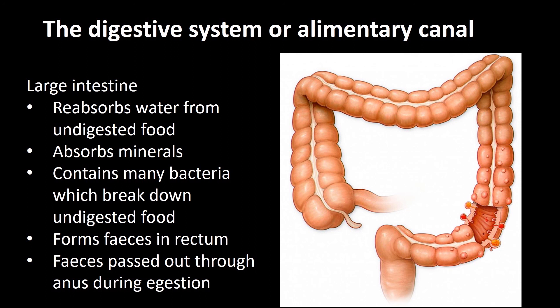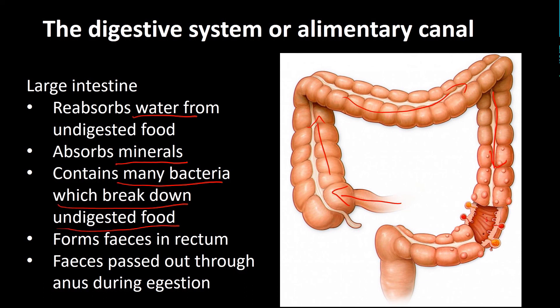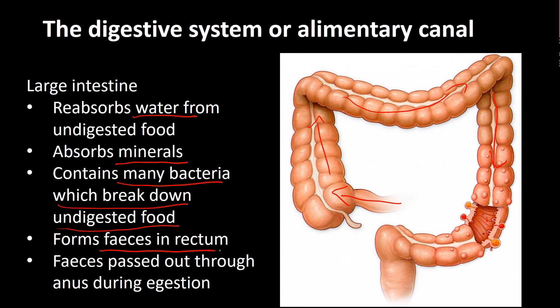The last part is the large intestine. When leftovers enter it, there's no food remaining — just water and waste. As material passes through, water and minerals are reabsorbed. Bacteria in the large intestine help break down remaining matter — which is why feces have a distinctive aroma. Feces form in the rectum in a semi-solid state and are then passed out of the anus during the process of egestion. And that's the journey of food through your digestive system.